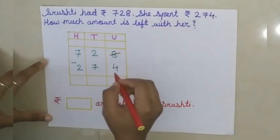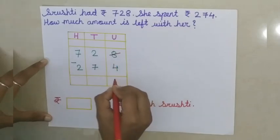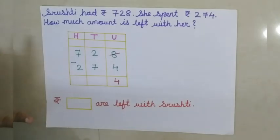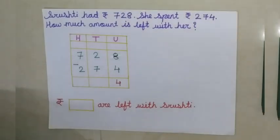Here, 8 is there. So 8 minus 4, we can easily subtract this. So 8 minus 4 is 4. Students, you can do the subtraction here directly. 8 minus 4, we can do it. So I have written here 4.